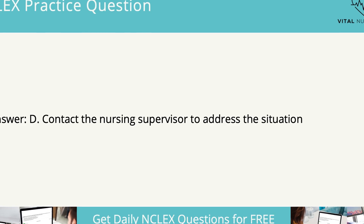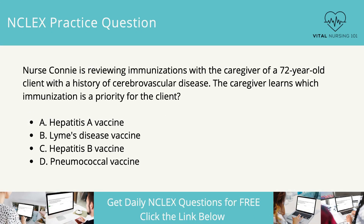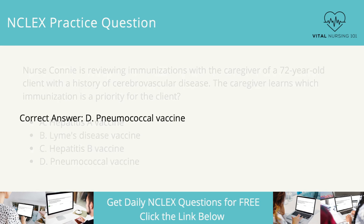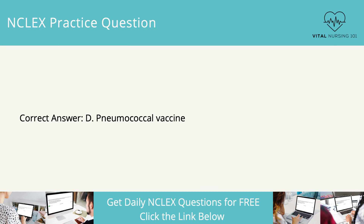Nurse Connie is reviewing immunizations with the caregiver of a 72-year-old client with a history of cerebrovascular disease. The caregiver learns which immunization is a priority for the client: Hepatitis A vaccine, Lyme's disease vaccine, Hepatitis B vaccine, or pneumococcal vaccine. The correct answer is pneumococcal vaccine. It is a priority immunization amongst the elderly, especially those with chronic illnesses, and is indicated for all adults 65 years and older, as well as younger patients at increased risk for pneumococcal pneumonia or invasive pneumococcal disease.